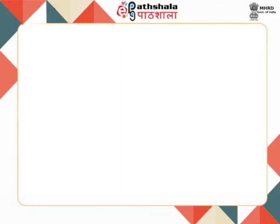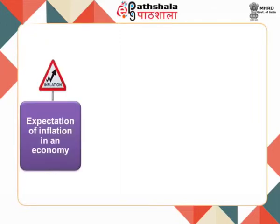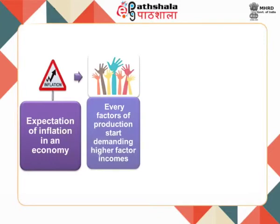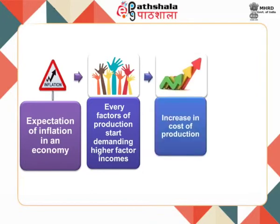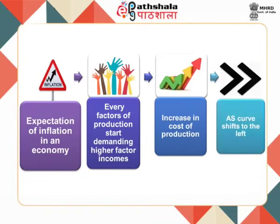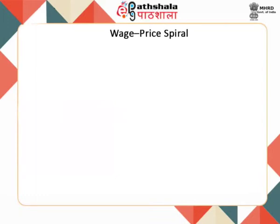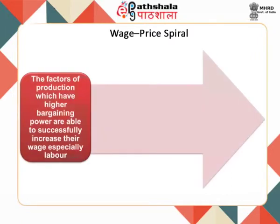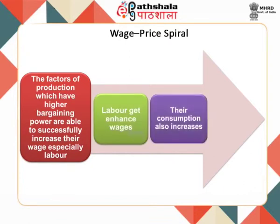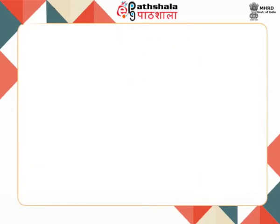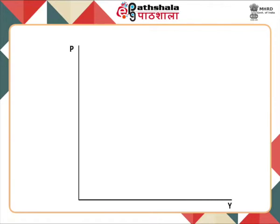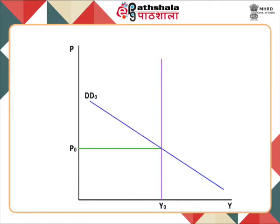The wage-price spiral starts with the expectation of inflation. Due to the expectation of inflation, every factor of production starts demanding higher factor incomes. Due to this rational profit-seeking behaviour, the cost of production increases and, as a consequence, the aggregate supply curve shifts to the left. Due to the redistribution of income, factors with higher bargaining power — especially labour — successfully increase their wages. As labour gets enhanced wages, their consumption increases, thereby increasing the aggregate demand of the economy.